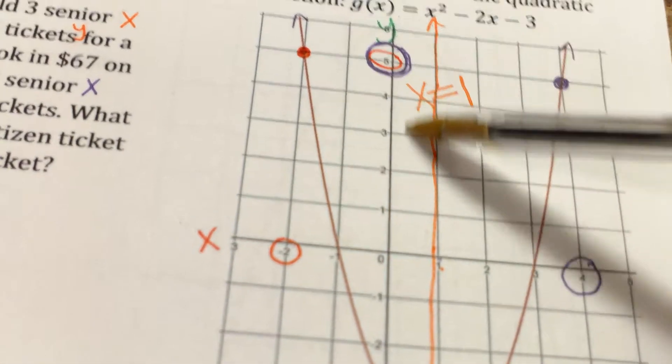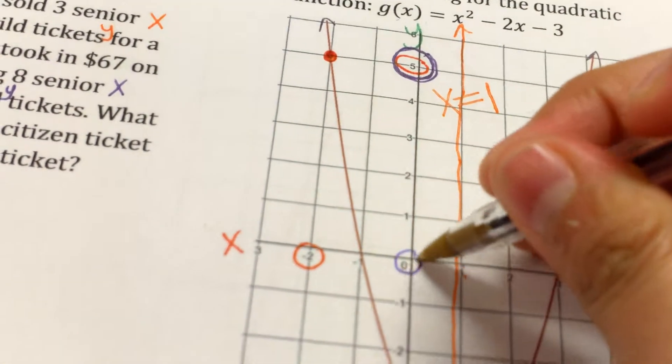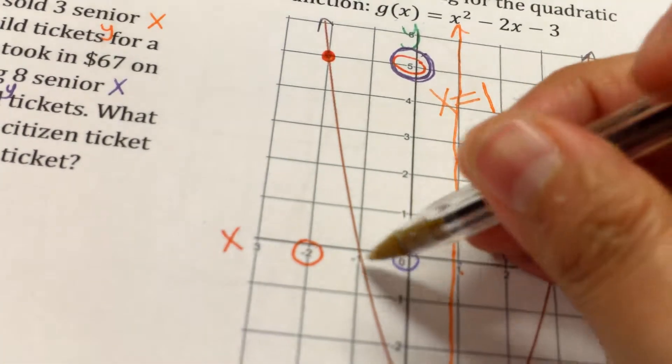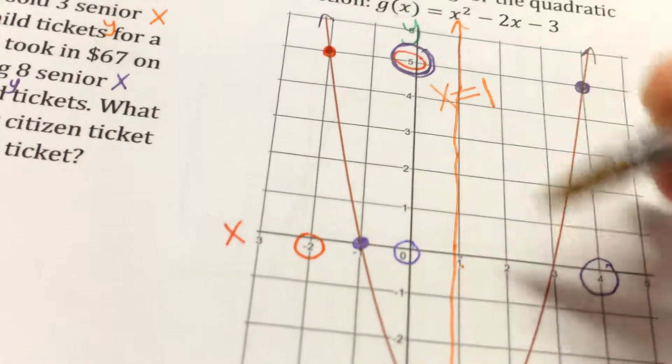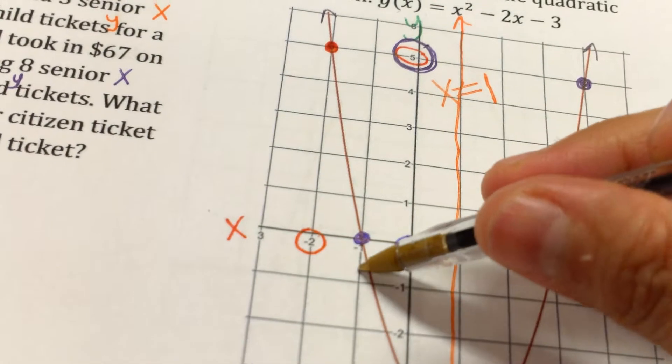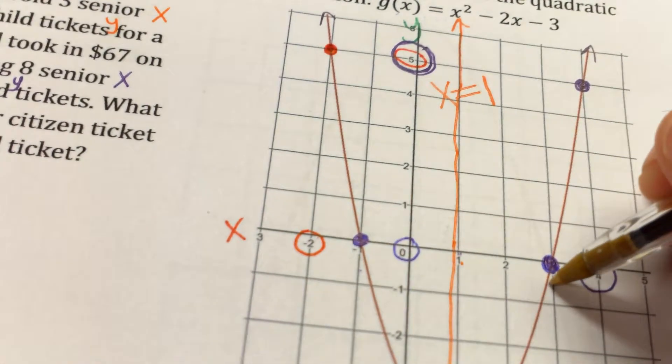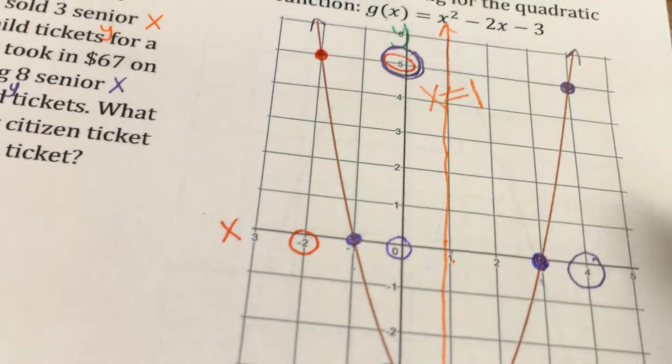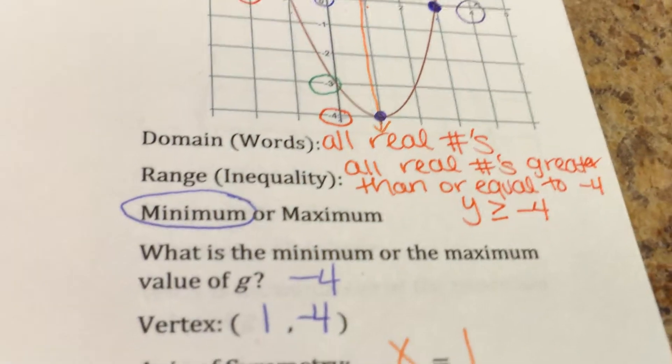Here's my y, here's my y, here's 0. Where's the graph at? Well, right here and right here, because that's where y is equal to 0. That value is negative 1, this value is positive 3. So it's negative 1 and positive 3.